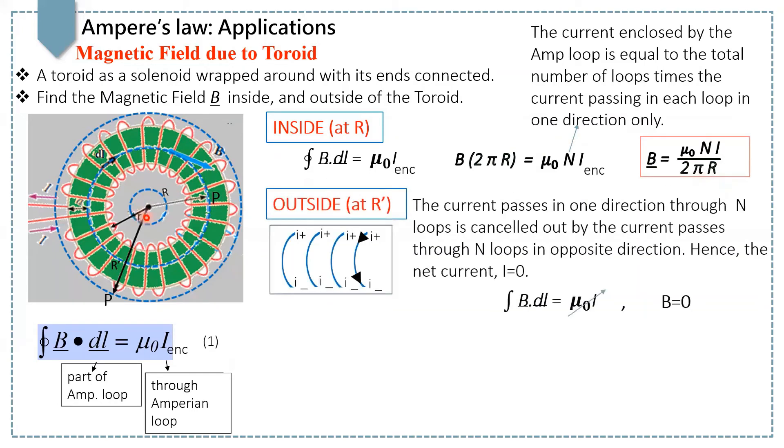To find the magnetic field at a distance R prime from center O, we apply the magnetic Ampere's law again, that is closed integral B dot dL equals mu naught I. But if you focus on this Amperian loop, which is passing through this point P now, you can see that this Amperian loop enclosed all of the coil loops.